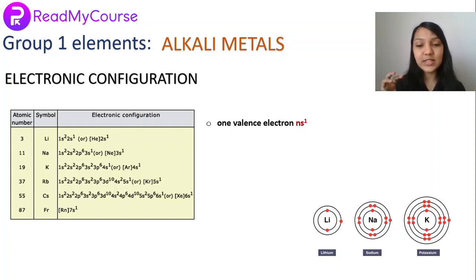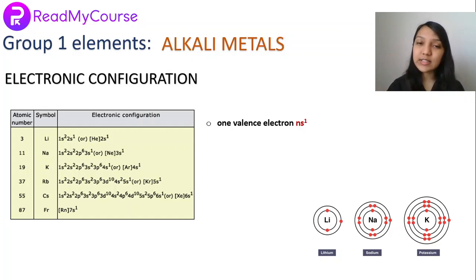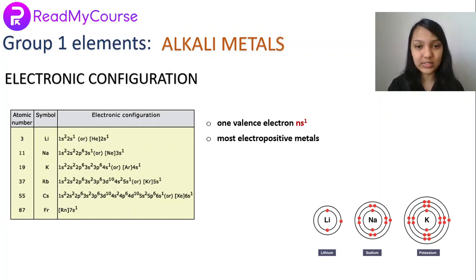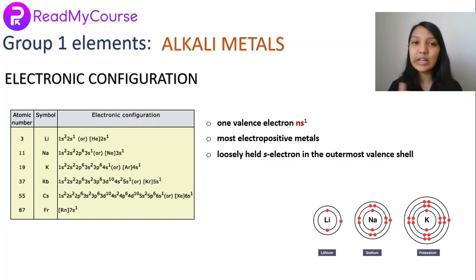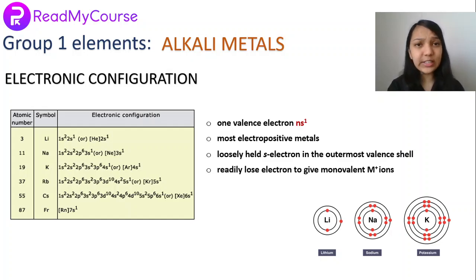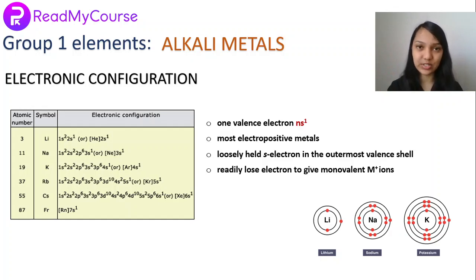As we go down the group, the size of the atom increases — lithium has the smallest size, then sodium, then potassium, and so on. Alkali metals are the most electropositive metals. They have a loosely held s electron in the outer orbital, so they readily give away this electron. They lose electrons to form monovalent M+ ions and are never found in free state in nature.